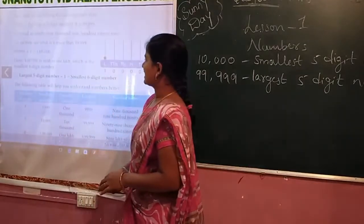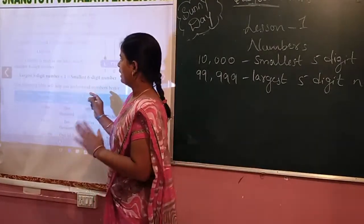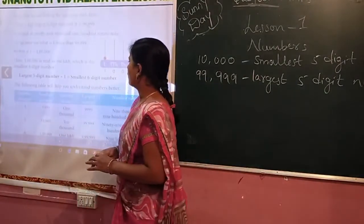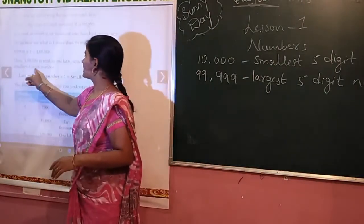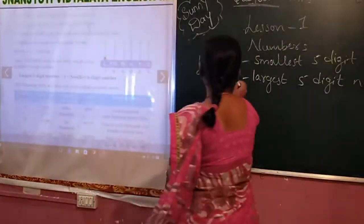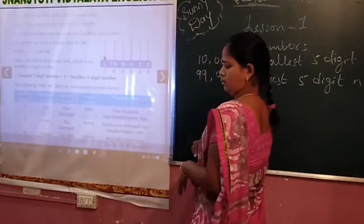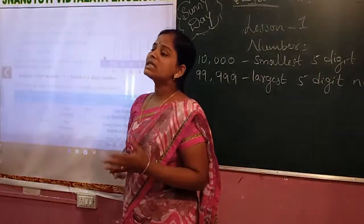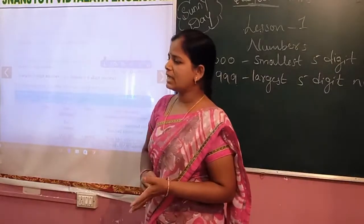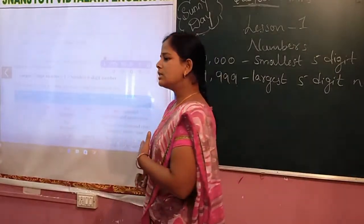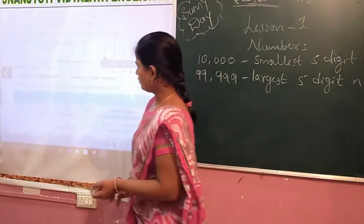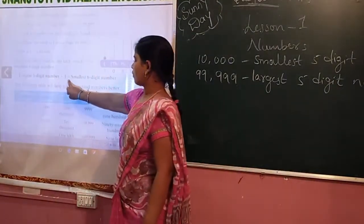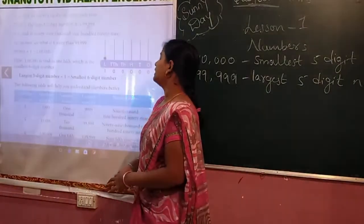1,00,000 is read as 1 lakh, which is the smallest 6-digit number. If we add 1 to 99,999, it will be 1 lakh — that is the smallest 6-digit number. Largest 5-digit number plus 1 equals the smallest 6-digit number.